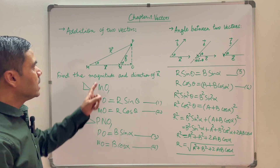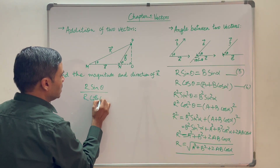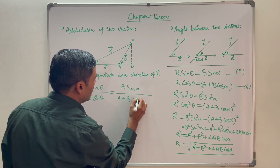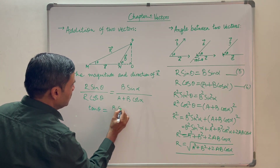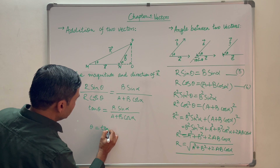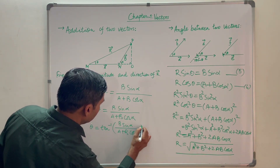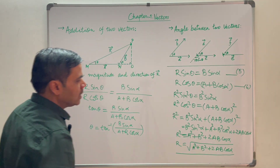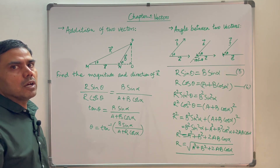Now we will find out the angle theta. Dividing equation 5 by equation 6: R sin θ over R cos θ equals B sin α over (A + B cos α). R cancels, so tan θ equals B sin α over (A + B cos α). Therefore θ equals tan⁻¹(B sin α / (A + B cos α)). So we have the magnitude of vector R as R = √(A² + B² + 2AB cos α), and the angle it makes with one of the vectors is θ = tan⁻¹(B sin α / (A + B cos α)).